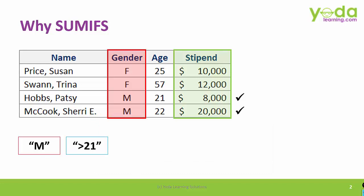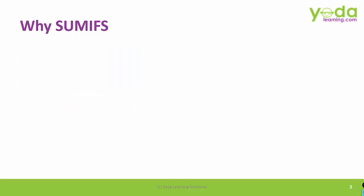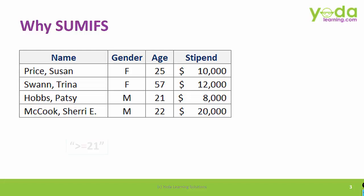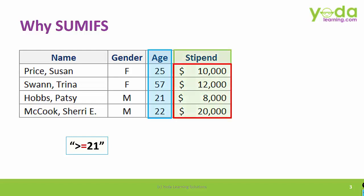Next, if I ask you for male members with age more than 21, you would also look into the age column and give me the answer 20,000, not 28,000. Another example: give me the total stipend of all those people whose age is more than or equal to 21. In that case, you would look into the age column and give the total of four numbers, which is 50,000.